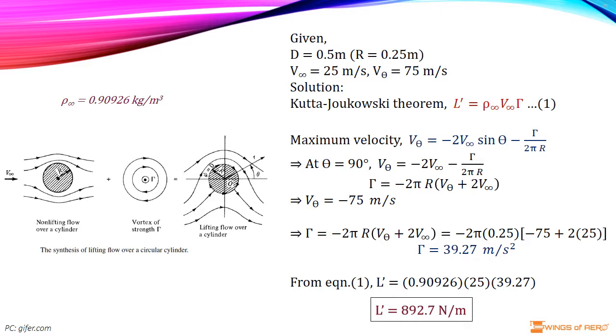Where ρ∞ is the density of flow. From the standard atmosphere table, at a given altitude of 3 kilometer, ρ is 0.90926 kilogram per meter cube. V∞ is the free stream velocity, which is given in the question. And Γ is the circulation around a given circular cylinder, which we don't know.